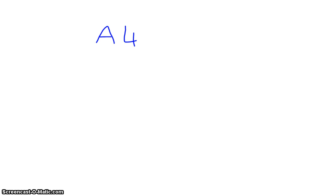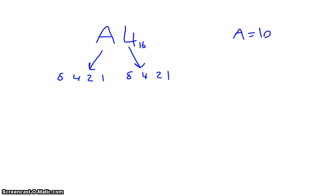Let's go through this again with another hex value. This time we're going to take A4. Sometimes you'll see a subscript 16 — this means base 16. We take the A: 1, 2, 4, 8. We take the 4: 1, 2, 4, 8. A is 10, so 8 plus 2 is 10. 4 is just 4. We've now gone from hex to binary.